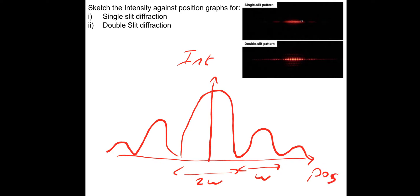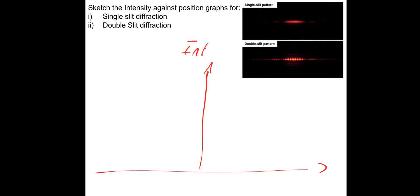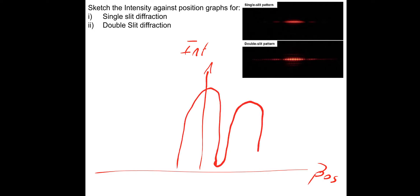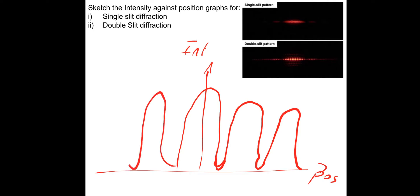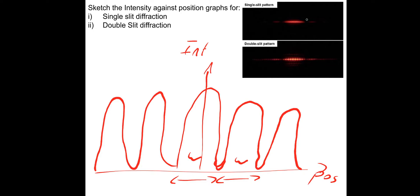And then for double slit diffraction, we've got intensity against position. The fringes are all the same width, they should touch the axis, and the intensity doesn't drop off very much at all. Your graph might look something like this - just indicate that these are all in fact the same width. Hopefully that recap went okay.